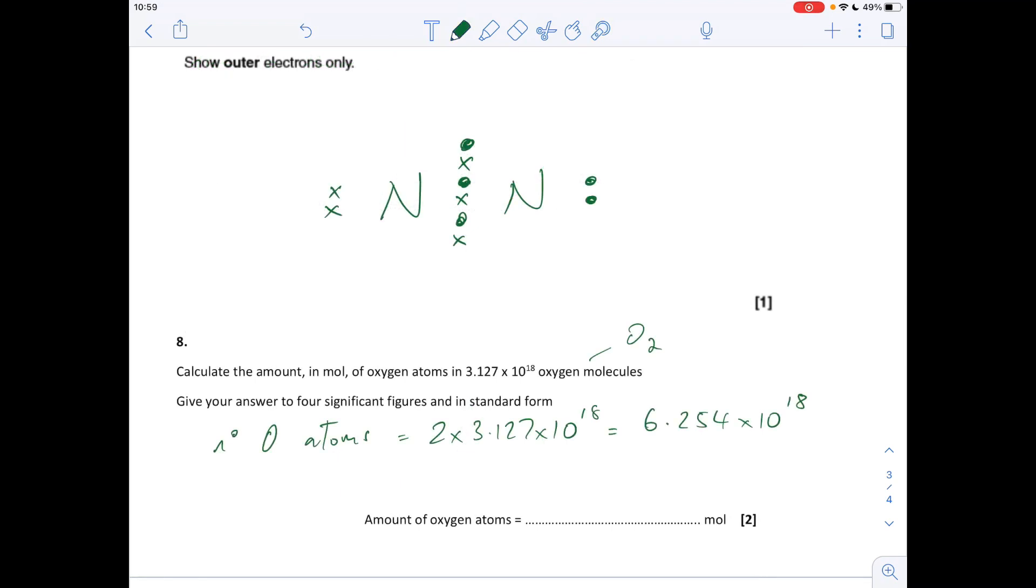Question eight, we've got a little calculation here. We're told that we've got 3.127 times 10 to the 18 oxygen molecules, so that's O2s. How many moles of atoms have we got? The first one we'll calculate is the number of atoms of oxygen, so we just double the number of oxygen molecules because each molecule contains two atoms, so we get that number there of atoms, 6.254 times 10 to the 18. Then to turn it into moles, we divide by Avogadro's number. That's giving us this calculated value here, but we've got to give it to four significant figures and in standard form. In terms of standard form, it's going to be 10 to the minus 5 because of the four zeros, and we've got 1.039.